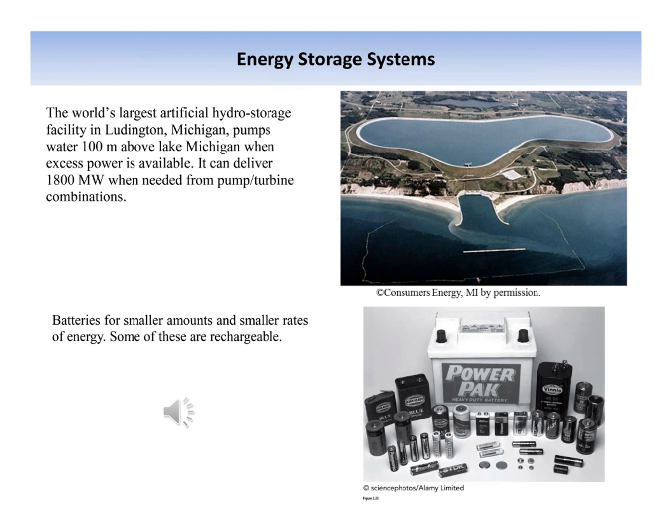Thermal Systems: Water can be heated by the solar influx, or by some other source, to provide heat at a time when this source is not available. Similarly, water can be chilled or frozen at night to be used the next day for air conditioning purposes. A cool pack is placed in the freezer so that the next day it can be used in a lunchbox to keep it cool. This is a gel with a high heat capacity or a substance that undergoes a phase change.